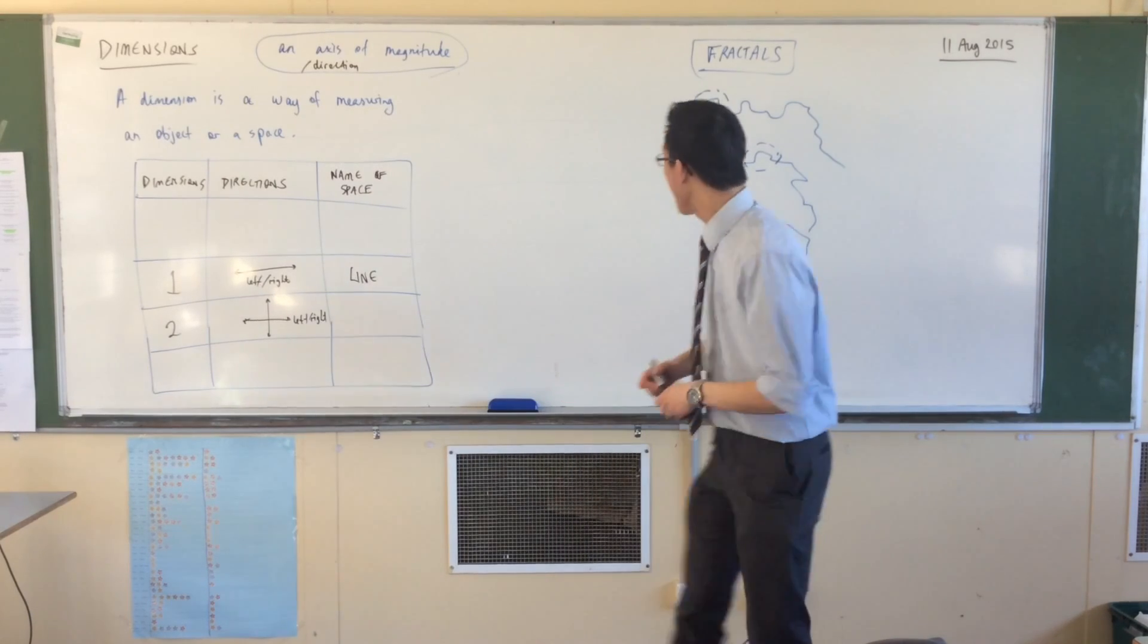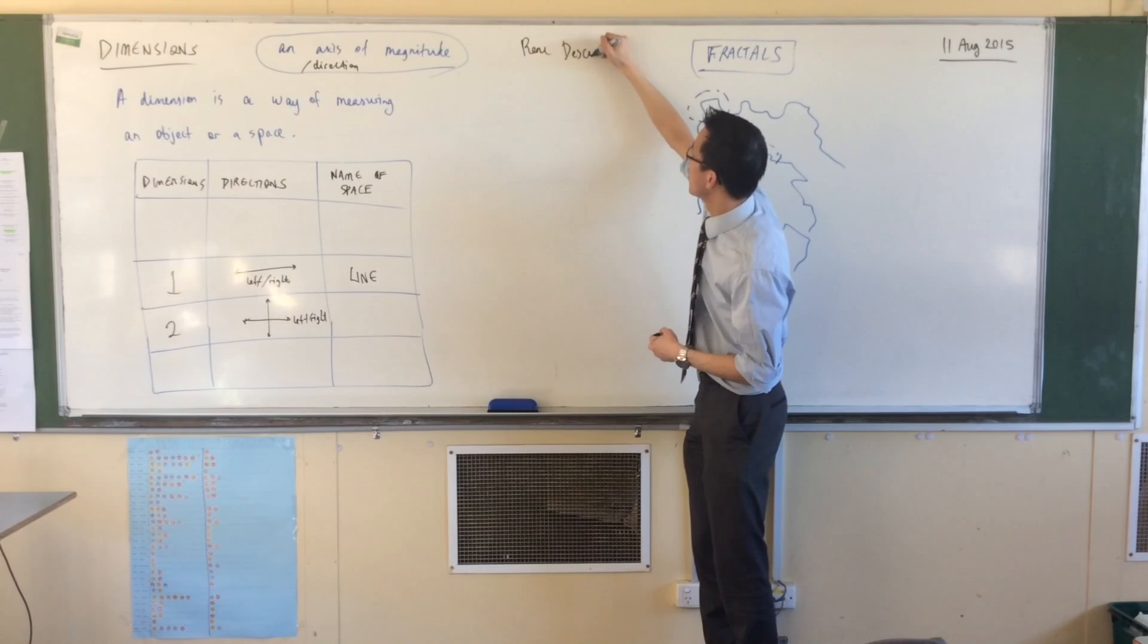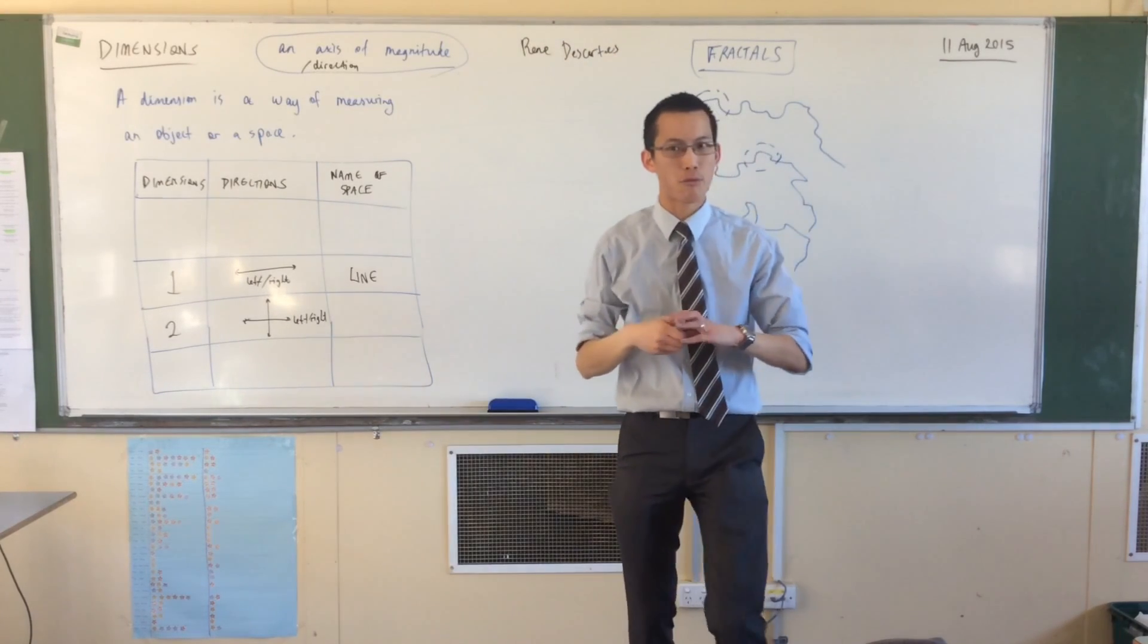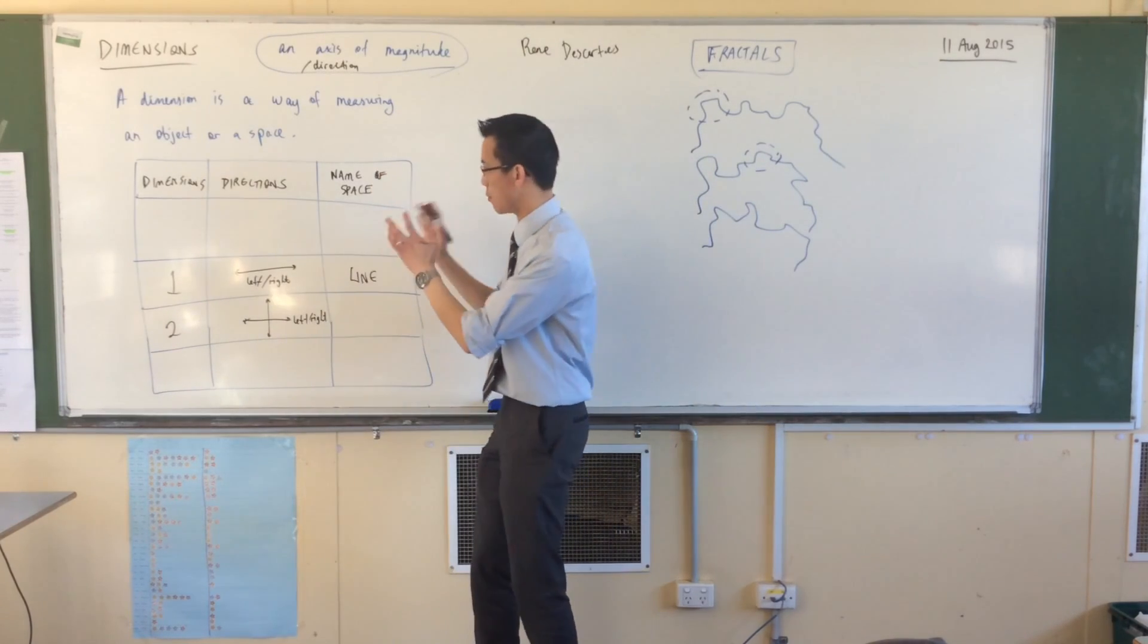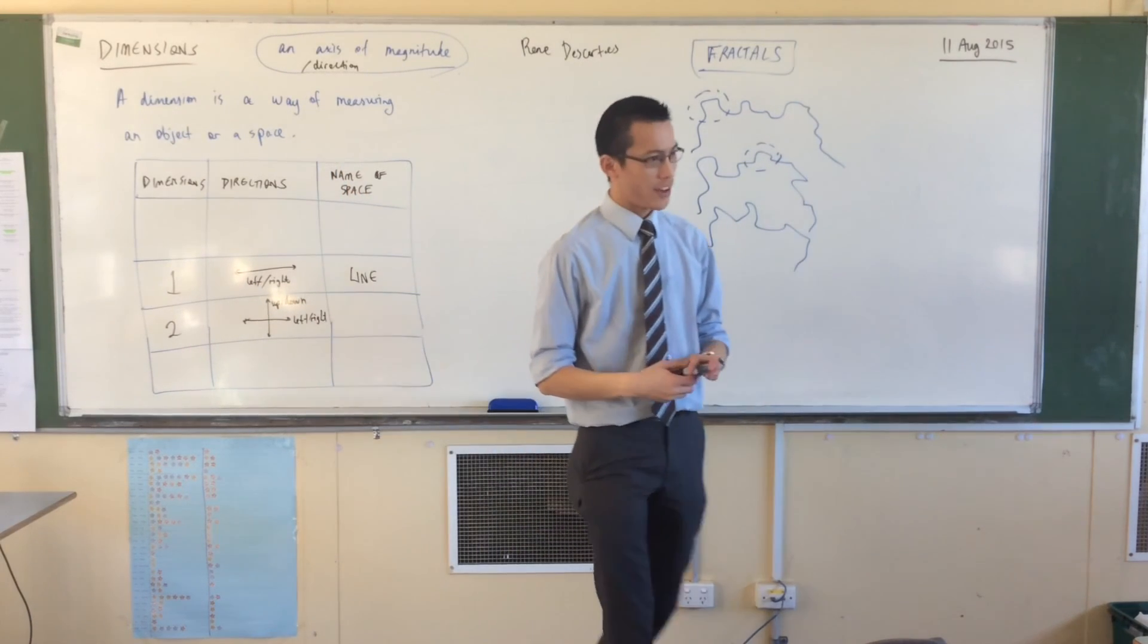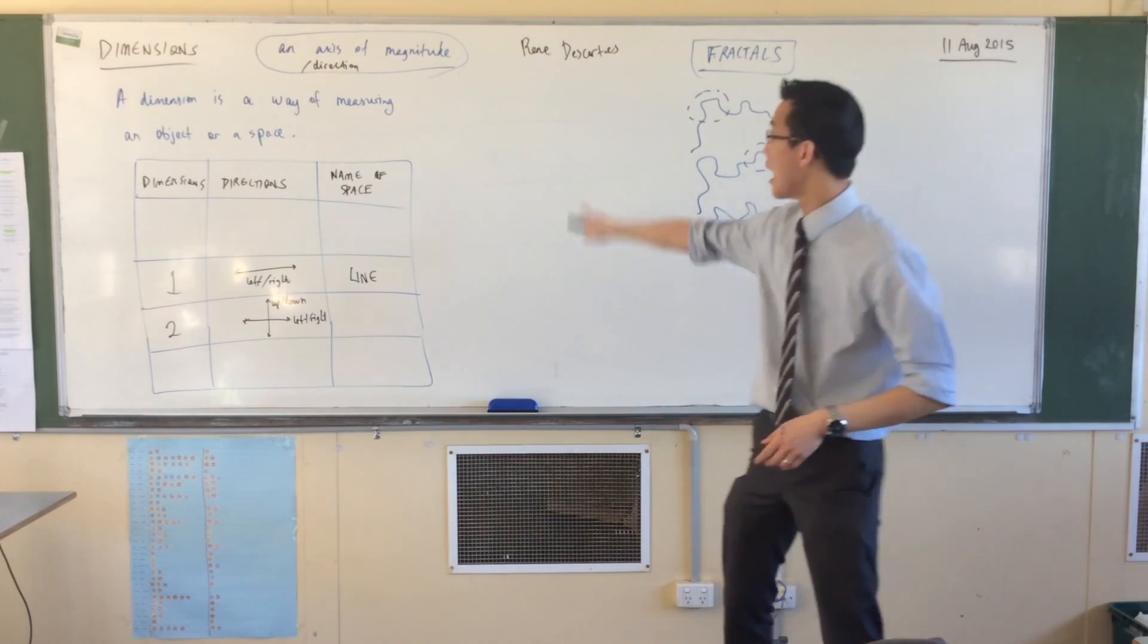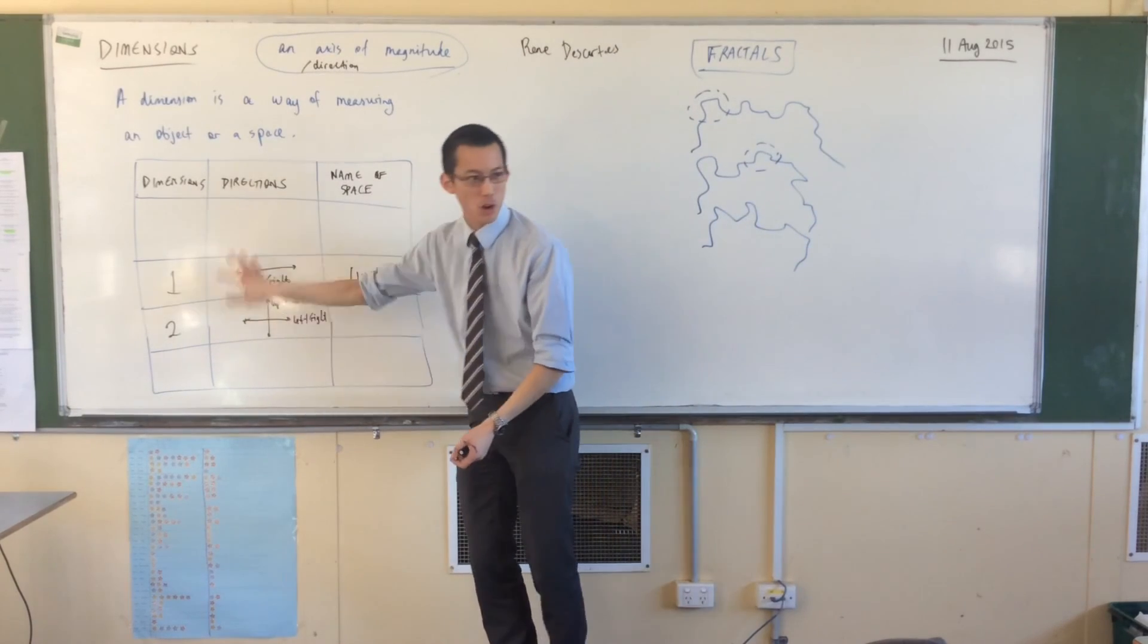Now, Rene Descartes, French guy, very smart. He was the first person to do a lot of rigorous work with understanding this kind of coordinate system, which is why this kind of shape, there's up-down, at least when we learn about it, bears his name. What do you call this thing? We call it the Cartesian plane. It's a space that's got two dimensions.